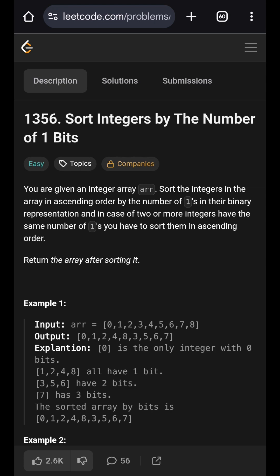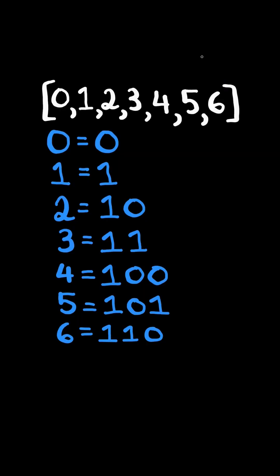Sort integers by the number of 1 bits. Consider the binary representation of each number and consider the number of 1 bits. Sort the integers by the number of 1 bits in their representation.